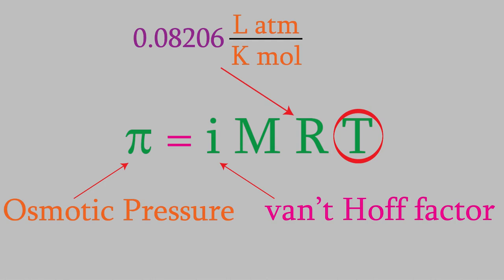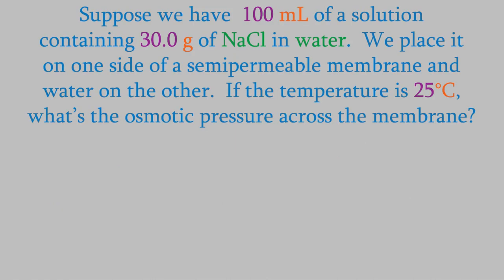Let's try an example. Suppose we have 100 milliliters of a solution containing 30 grams of sodium chloride dissolved in water. We put this on one side of a semipermeable membrane and pure water on the other side, and the temperature is 25.0 degrees Celsius. What will be the osmotic pressure across the membrane? For this problem, we'll use the equation we just learned for osmotic pressure. The van't Hoff factor tells us how many particles we'll get for every solute molecule. Since NaCl breaks up into two ions, the van't Hoff factor is 2.